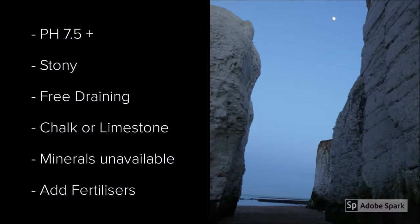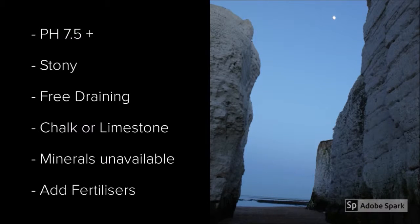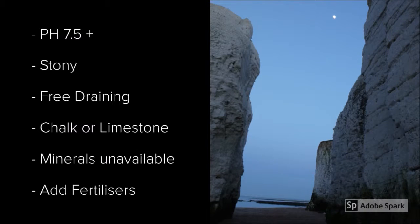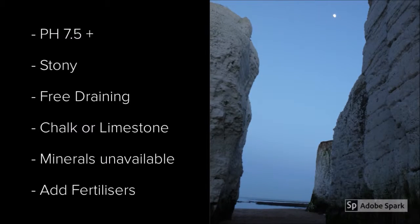Chalky soil is alkaline with a pH of 7.5 or more. It's usually stony and free draining, and often overlays chalk or limestone bedrock. This means some minerals such as magnesium and iron become unavailable to plants, which can cause poor growth and yellowing of leaves. But this can be remedied easily by just adding fertilizers.